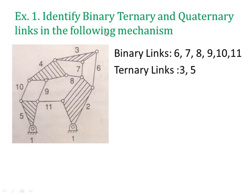Ternary links: link number 3 is connected to link number 6, link number 7, and link number 4 — three links — so it is called a ternary link. Link number 5 is also a ternary link, connected to link number 1, link number 11, and link number 10. It connects to links 9 and 11 at the same joint, giving 3 locations, which is why it is a ternary link.